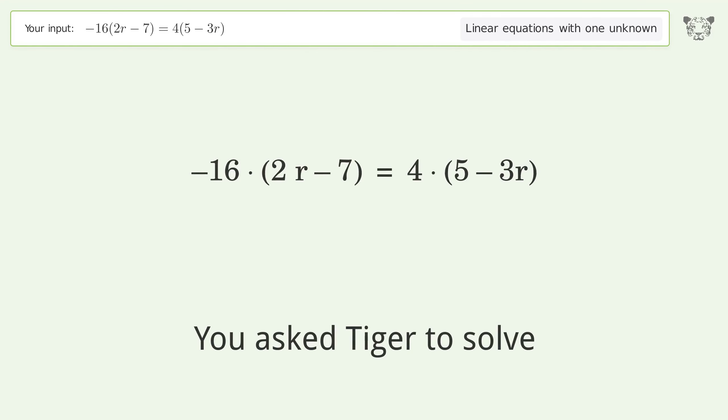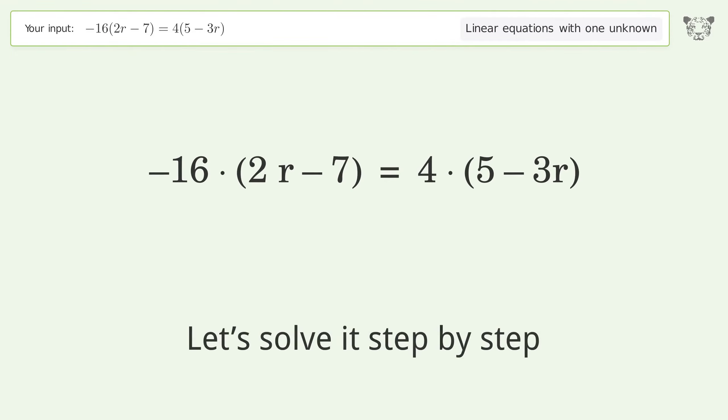You asked Tiger to solve this linear equation with one unknown. The final result is r equals 23 over 5. Let's solve it step by step. Simplify the expression and expand the parentheses.